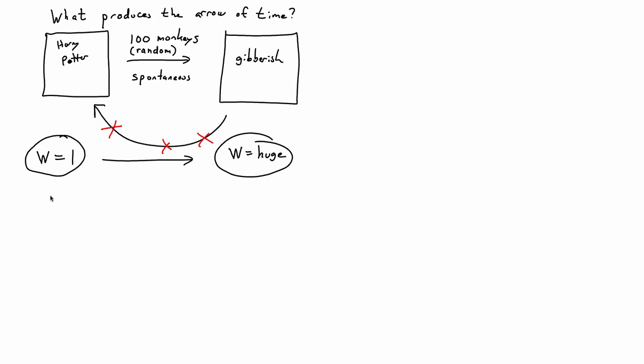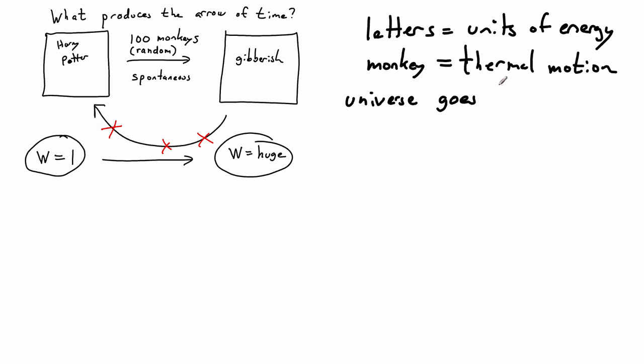We can link this analogy with monkeys to what we actually see with molecules. Imagine the plastic letters actually stand for units of energy. And monkeys - where are the monkeys? The monkeys are things that are able to shuffle around the plastic letters. So what shuffles around units of energy? Random thermal motion. So if we ask what makes this forward process spontaneous and the backward process non-spontaneous, we could say it's that we want to go to a bigger W. So we can make a statement here: the universe goes toward higher values of W.